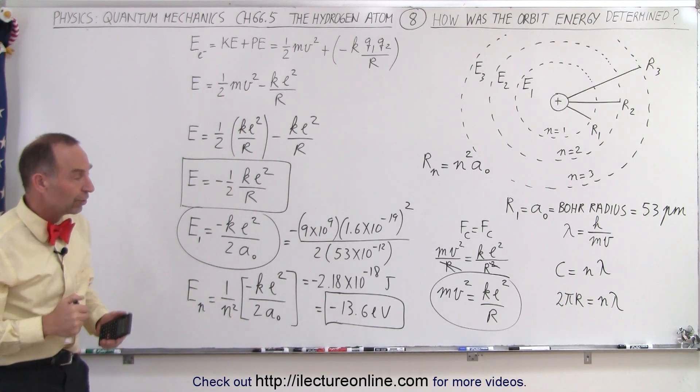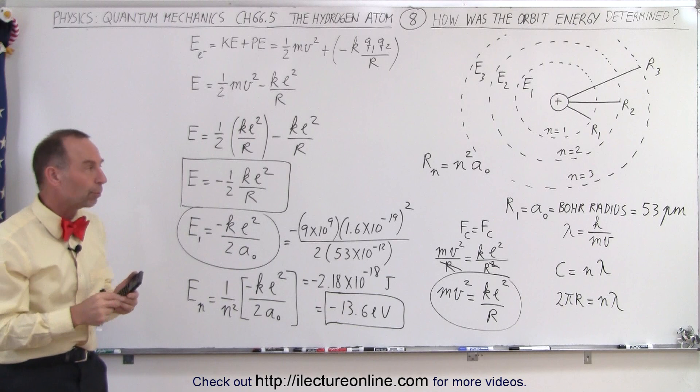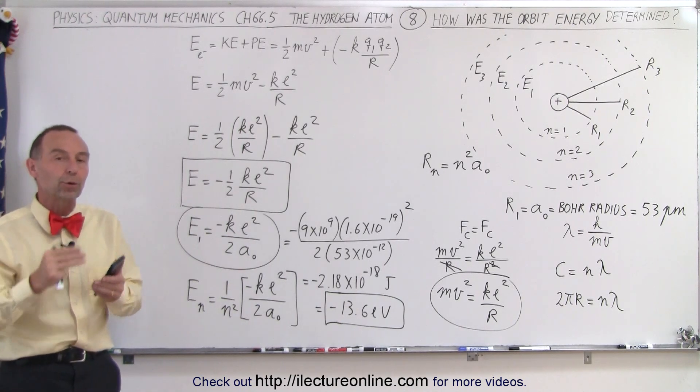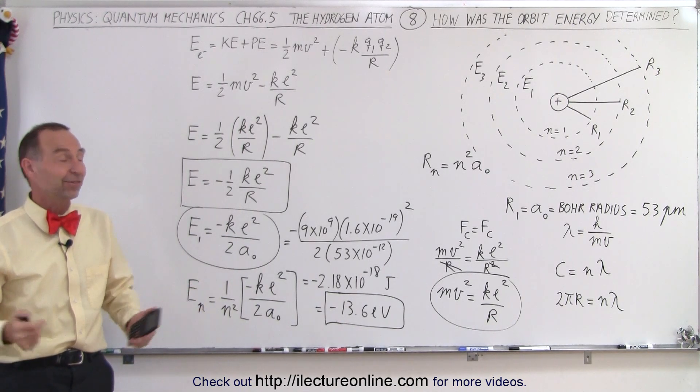But that's how we determined the energy level of the innermost orbit of the electron and how we determine the energy of the orbits beyond that. And that's how it's done.